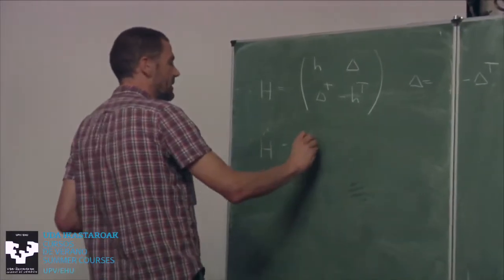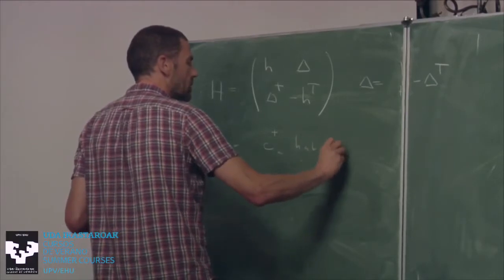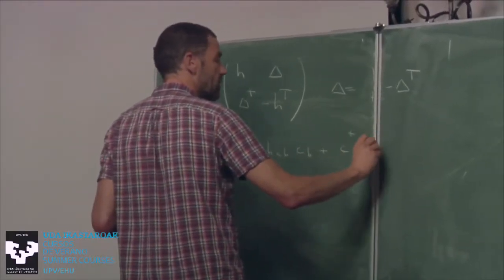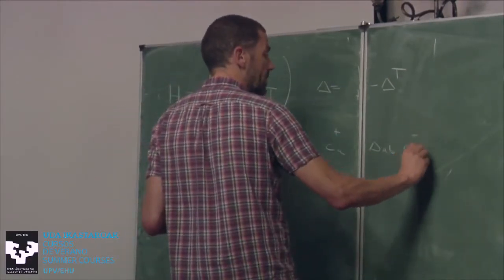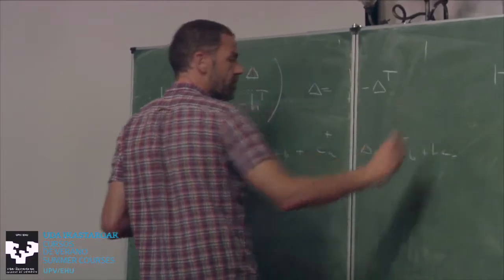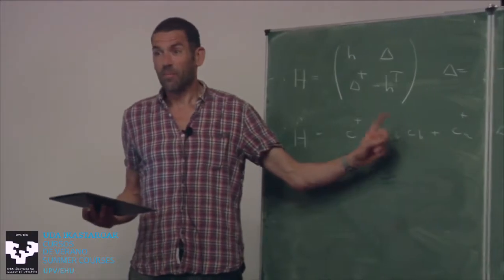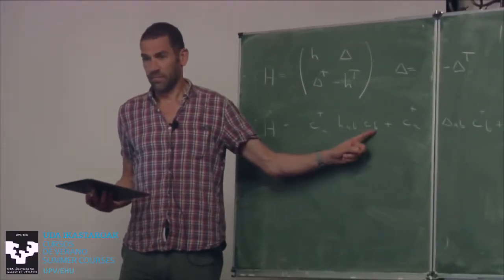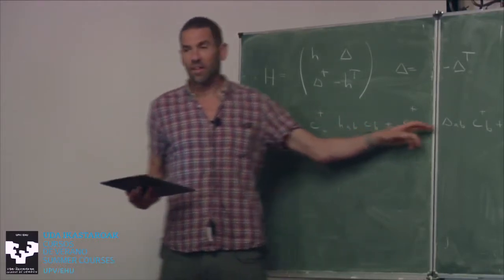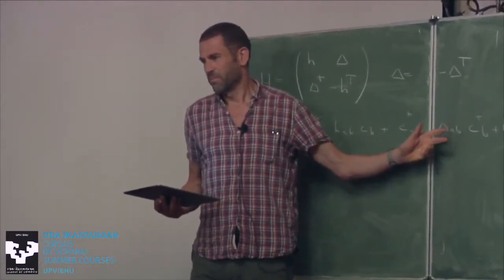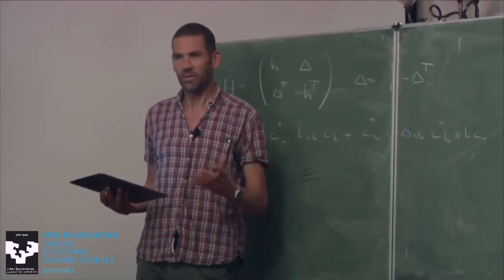But now I want to argue a little differently, and I write this guy in a second quantized representation. So I can write it like this: sum over a, b of c dagger a h a b c b plus c dagger a delta a b c dagger b plus hermitian conjugate. Agree?